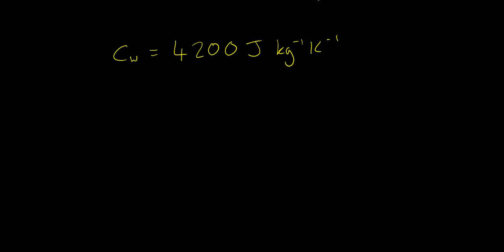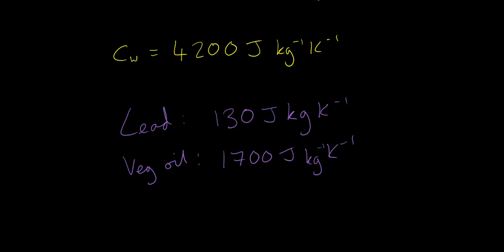Here are some other specific heat capacities. Lead has a specific heat capacity of just 130 joules per kilogram per Kelvin, and vegetable oil has a specific heat capacity somewhere in between that of lead and water, which is about 1700 joules per kilogram per Kelvin. This means that lead is very easy to heat up. You need actually about 30 times less energy to raise the temperature of lead than you do to raise the temperature of the same amount of water.